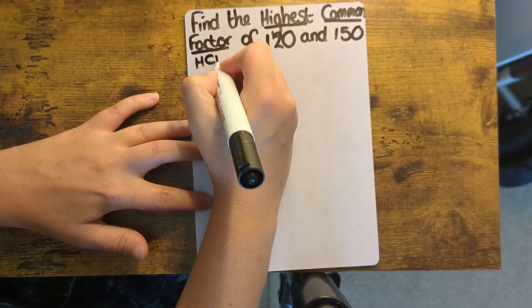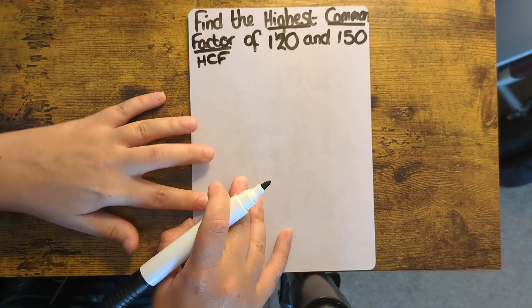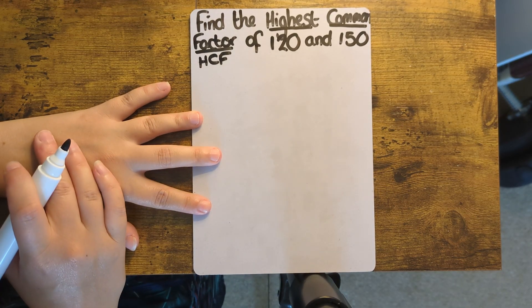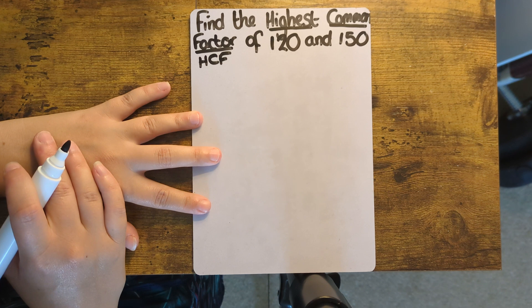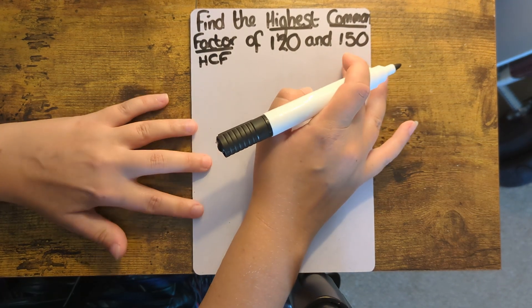So first of all, we're going to look at what is meant by the highest common factor, also known as the HCF. What this means is we need to find the biggest times table that we see two different numbers in, in this case 120 and 150.